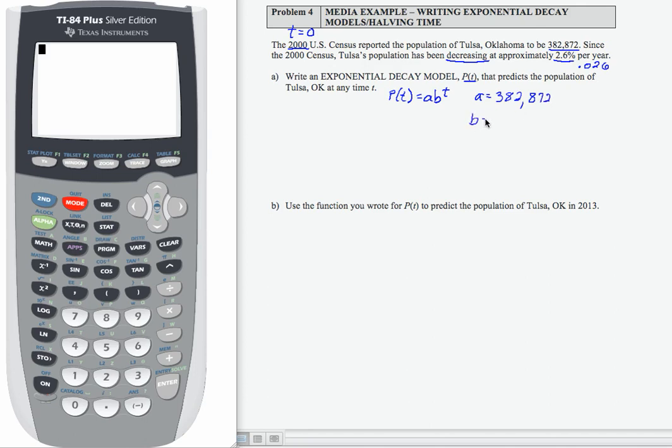Our b value, because our population is decreasing, I need to subtract the rate of decrease as a decimal from 1. So that's going to be 1 minus 0.026,